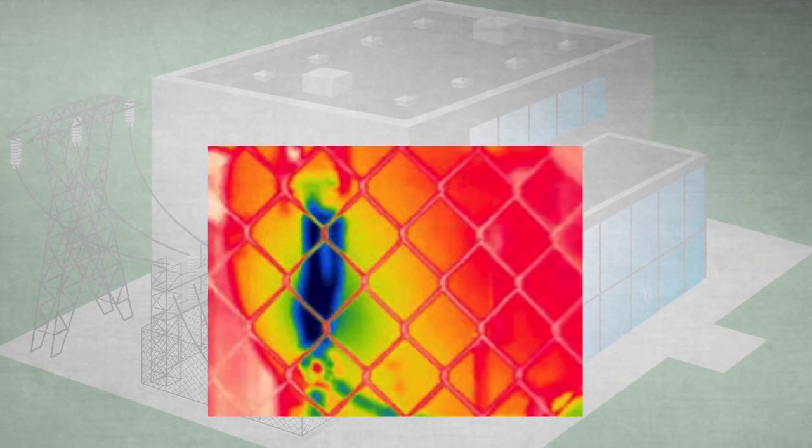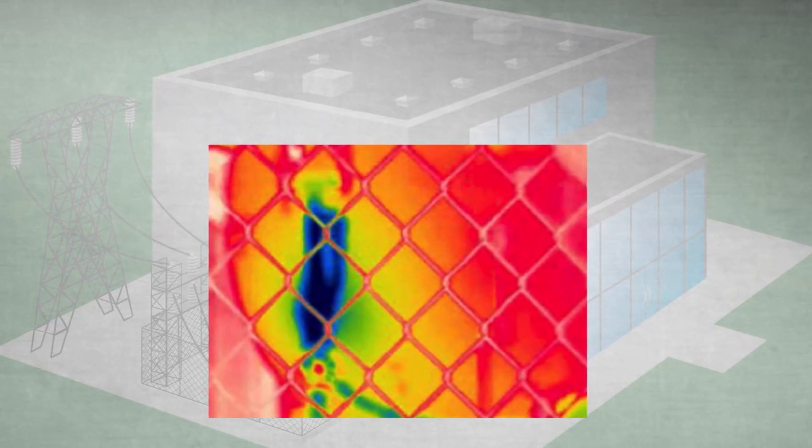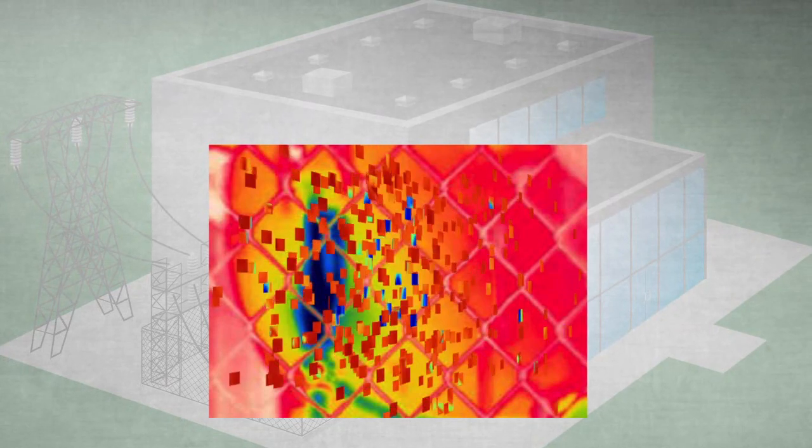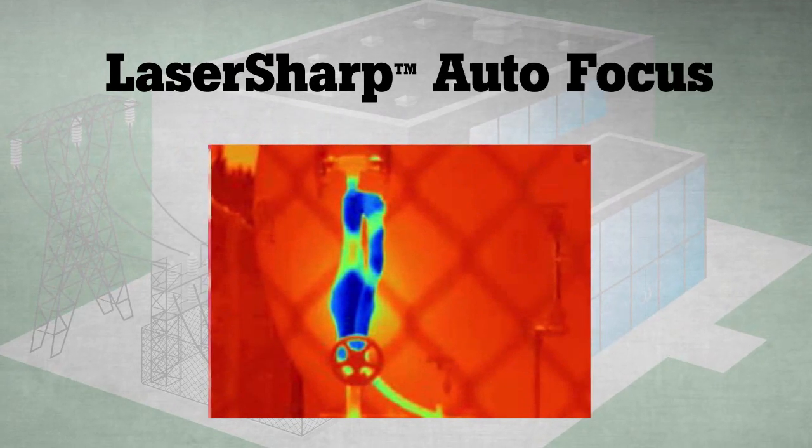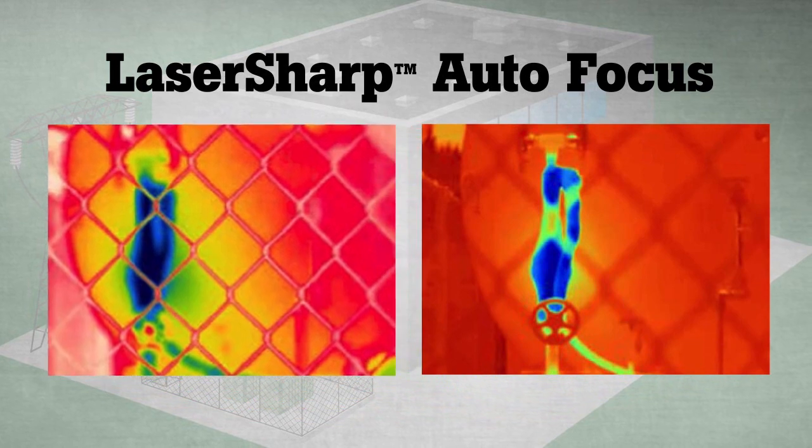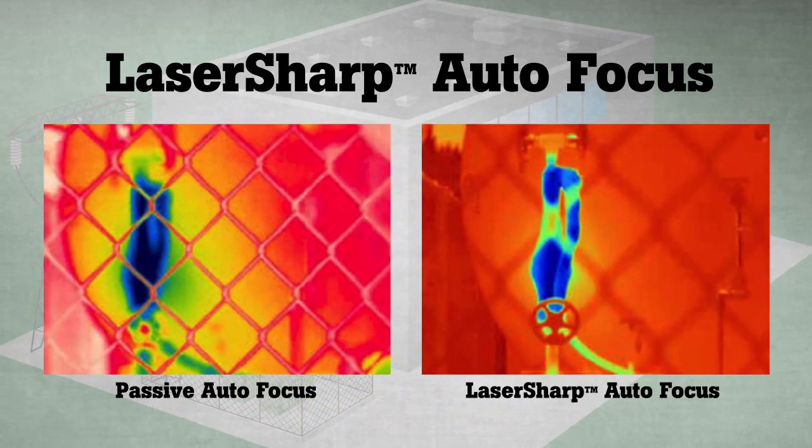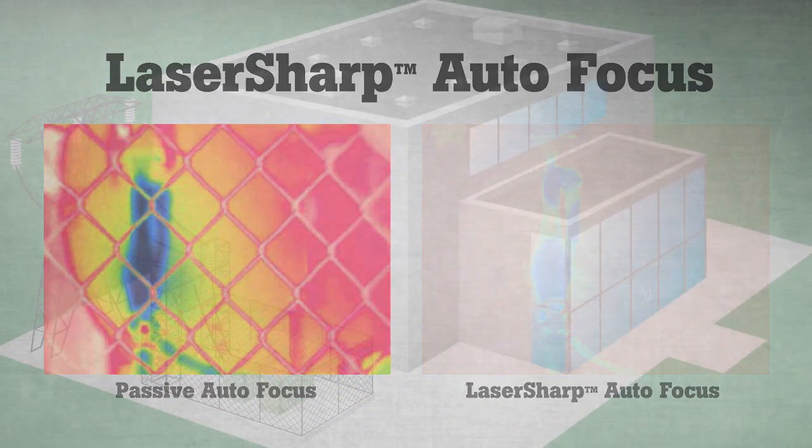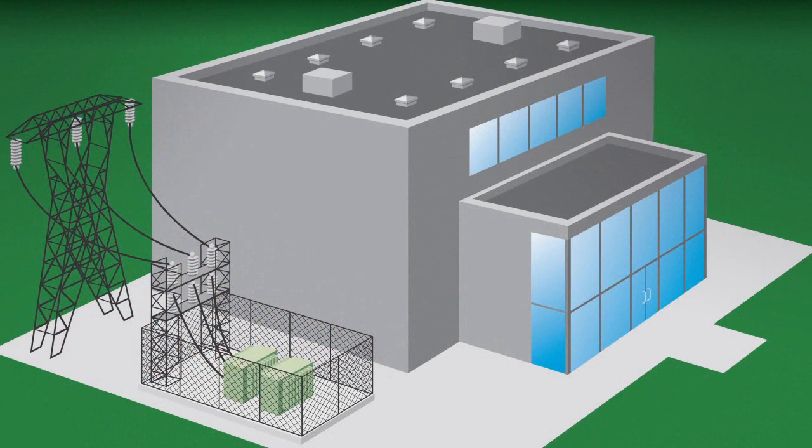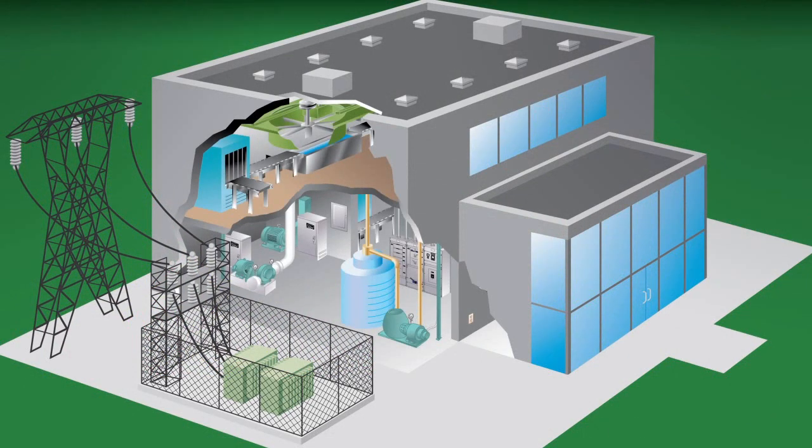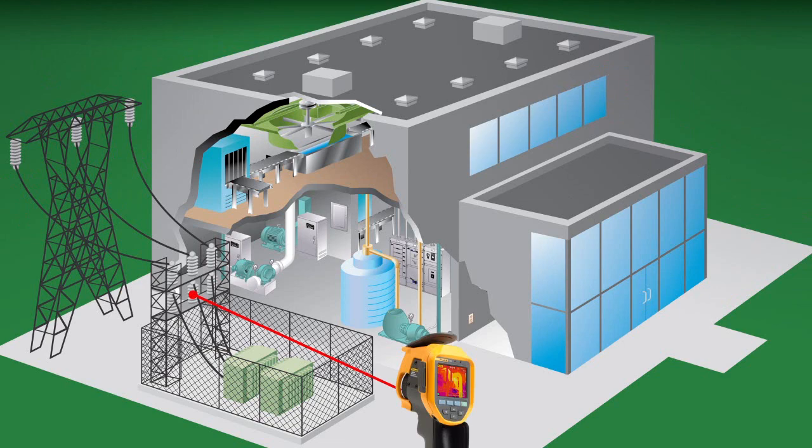Announcing a more intelligent autofocus system: laser sharp autofocus, available only from Fluke. Laser sharp autofocus tells you exactly where you are focusing. It uses a laser to calculate the distance before it focuses.